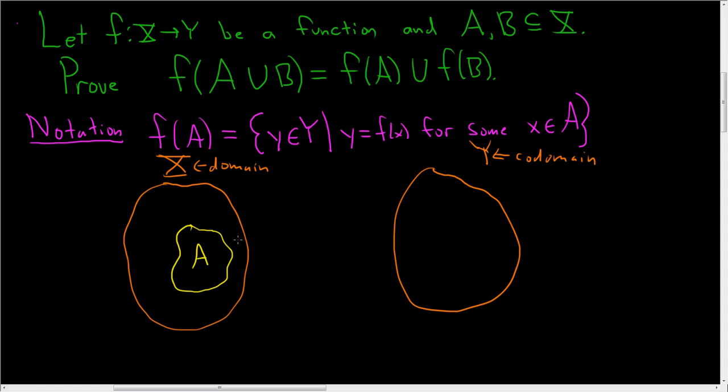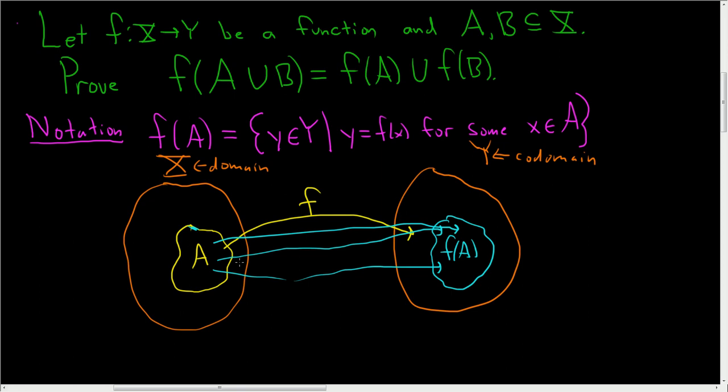And F takes A to another set, which we denote by F of A. So this will be F of A. So it's the set of all of the Ys in the codomain that come from A. So it's a set of all the Y values that come from A in the domain. So F takes all of these X values in A to F of A. So it's called the direct image.